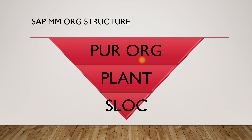So we will have most of the data that we can fetch from the purchasing organization level and the plant level. Basically, these are the three organization levels you can describe inside your SAP MM organization structure, and this is the difference between your SAP organization structure and SAP MM organization structure. You might get this question in your interview, so be prepared on this one.